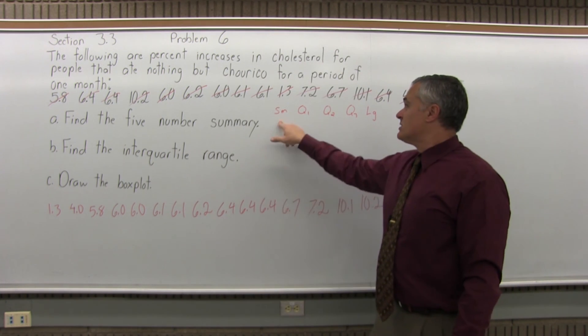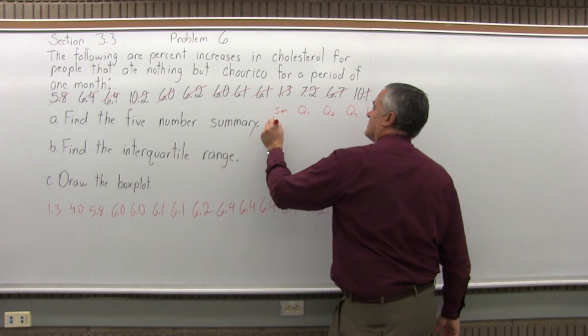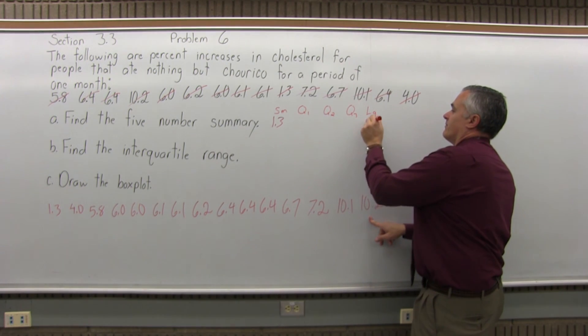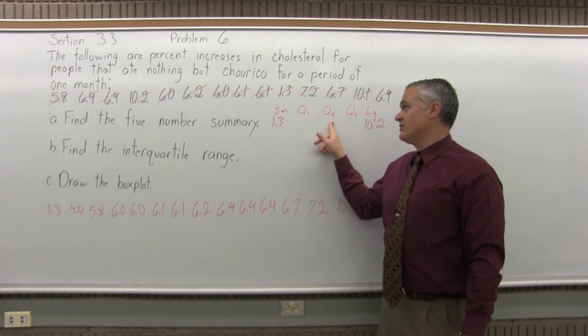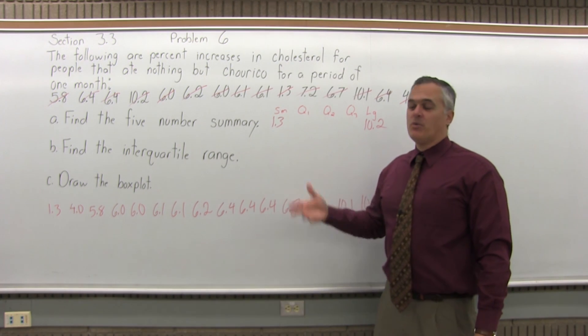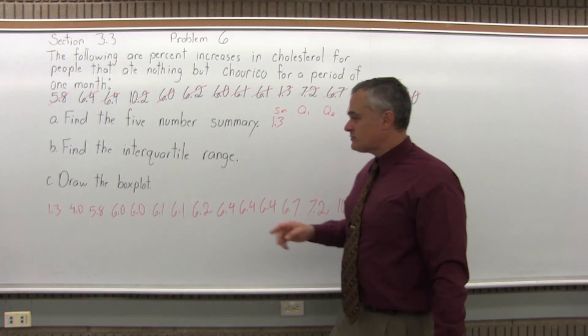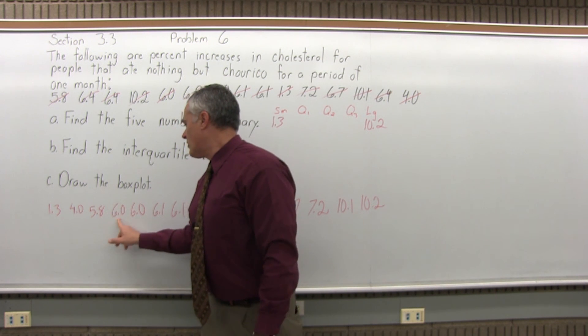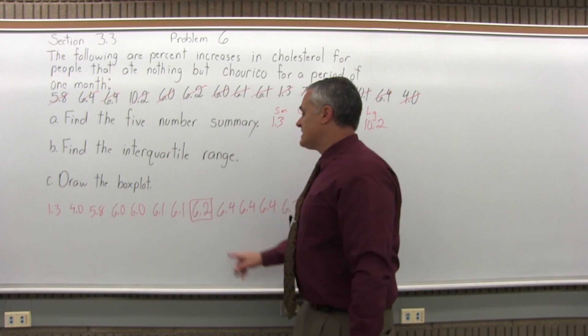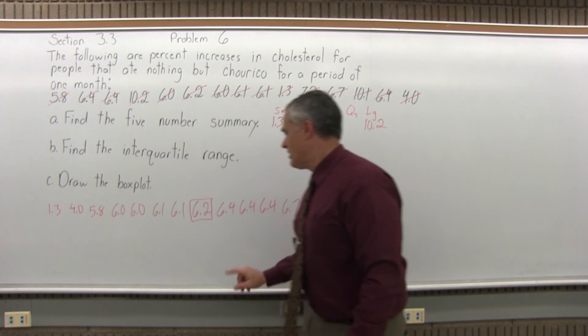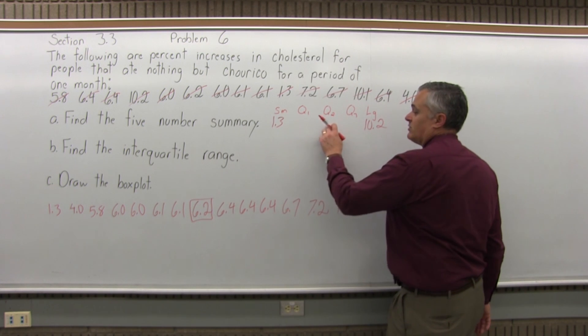Now once the list is in order, the smallest and largest data values are just immediately obvious. The smallest is 1.3 and the biggest is 10.2. Now for the quartiles, you have to find Q2 as the first thing you find. You can't find Q1 first. You have to find Q2 as the median or middle point in the list. Where we have 15 data values, 15 is odd, there will be one value right in the middle. Should be in the 8th position. So if that's in position number 8, there are 7 that are smaller and 7 that are larger. So it is in the middle. My Q2 is 6.2.